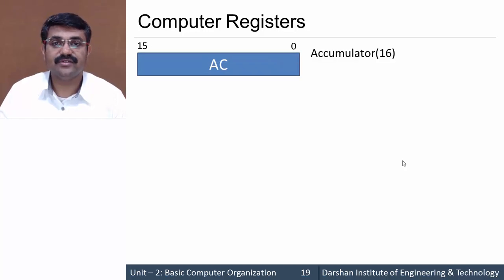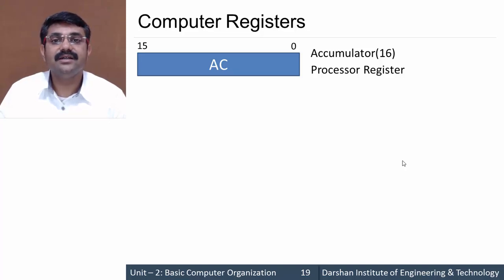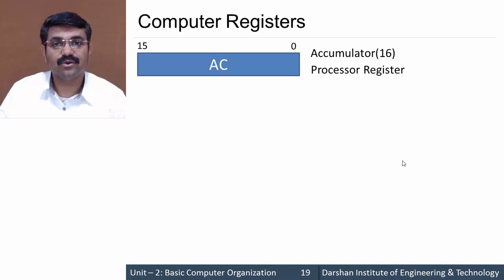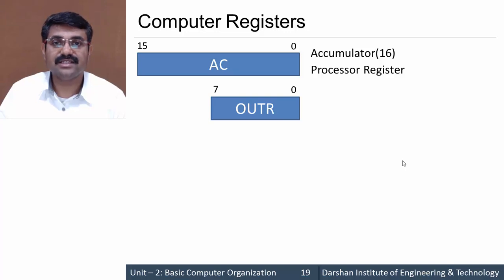Then we have AC — Accumulator — which is of size 16 bits. It is also termed as a processor register. When we perform any micro operations like arithmetic, shift, or logic operations, the result generated will be stored into this accumulator. Data processing is also carried out on this register, making it one of the most important registers for our basic computer.